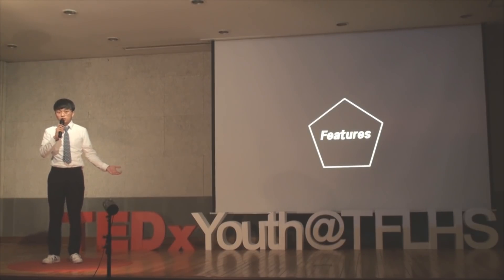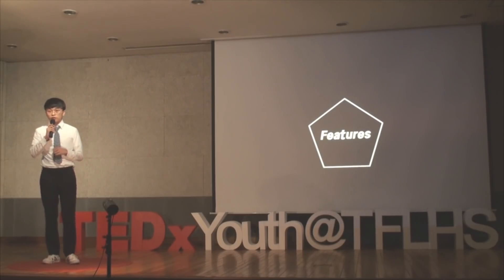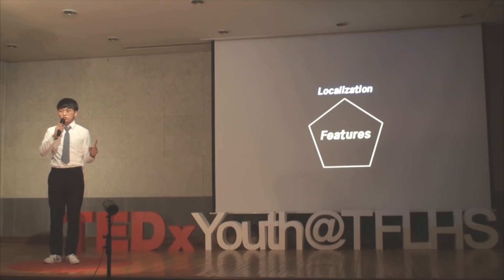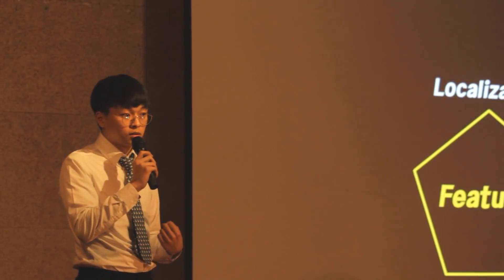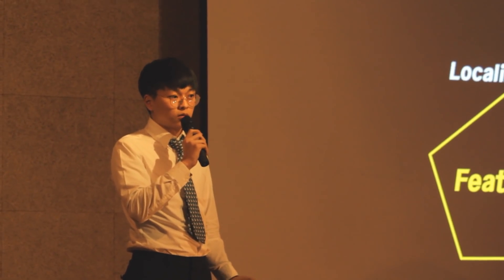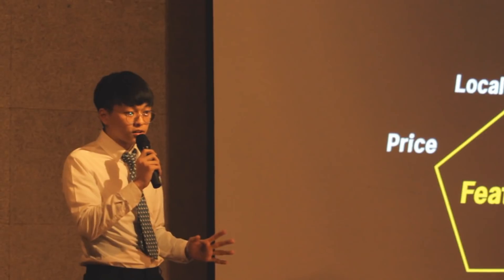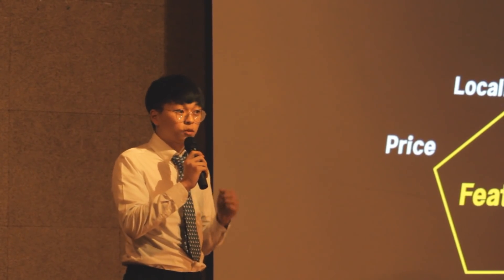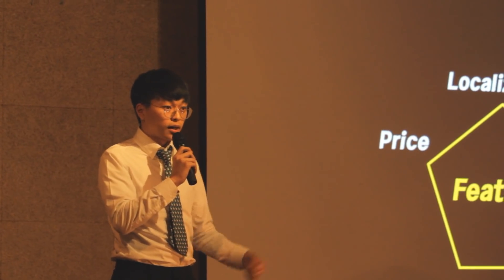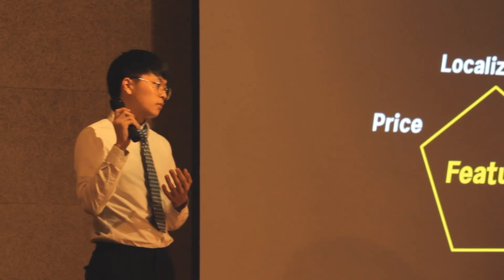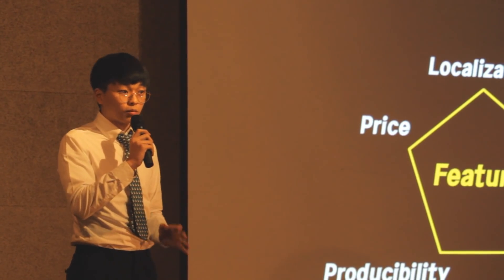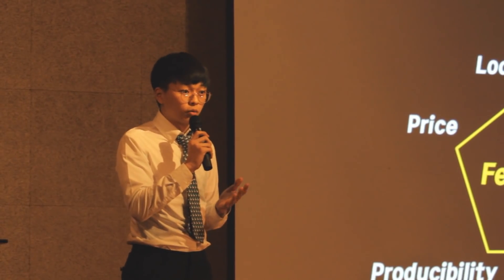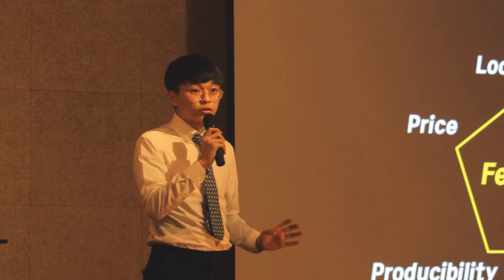The following features will help you understand it better. First, localization — it is the most essential part of appropriate technology. It should be relevant to specific areas, considering its environment. Second, price — products that adopt appropriate technology should be cheap for accessibility and distribution. Third, producibility — it is optimal that the material of appropriate technology is from the region where it is used, so that the local community can produce the item by itself.